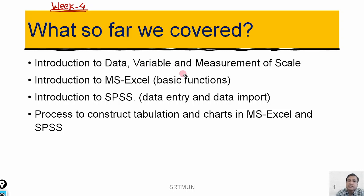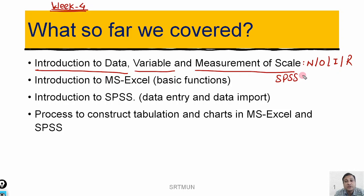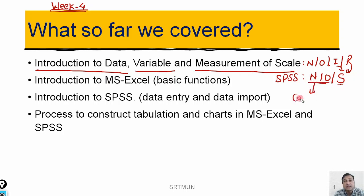At the beginning of this course, we started with the introduction to data, where we tried to understand the meaning of data and different types of data. Then we tried to understand the meaning of variable and different types of variable. We have seen there are four measurement scales: nominal, ordinal, interval, and ratio scale. In SPSS, we consider only three types: nominal, ordinal, and scale — where scale includes interval and ratio. Nominal and ordinal are associated with categorical or qualitative data, while scale is associated with numeric or quantitative data.